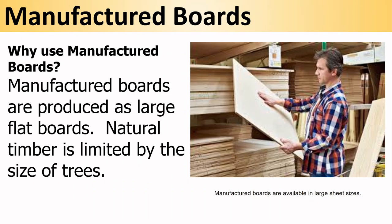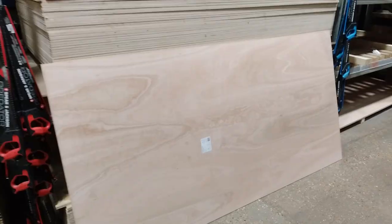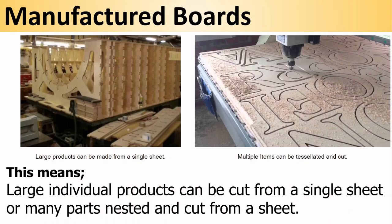Why do we use manufactured boards? Manufactured boards are produced as large flat boards, whereas natural timber is limited by the size of the trees. Manufactured boards are available in large sheet sizes — you can see MDF, chipboard and plywood and the large sizes that sheets are available in. This means large individual products can be cut from a single sheet, or multiple items can be tessellated and cut using a CNC machine.